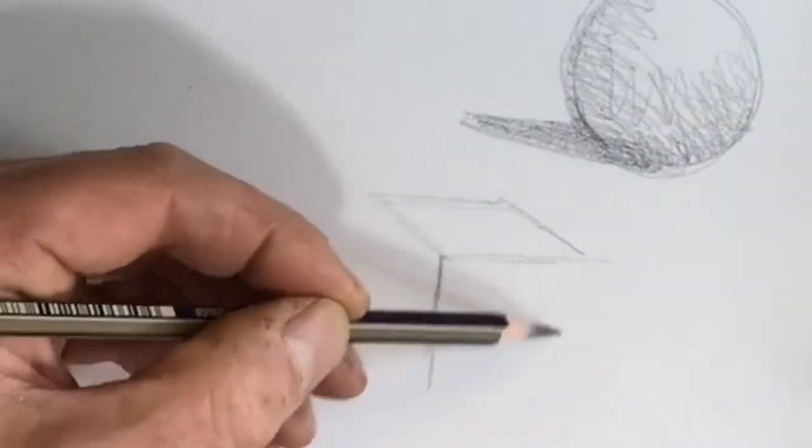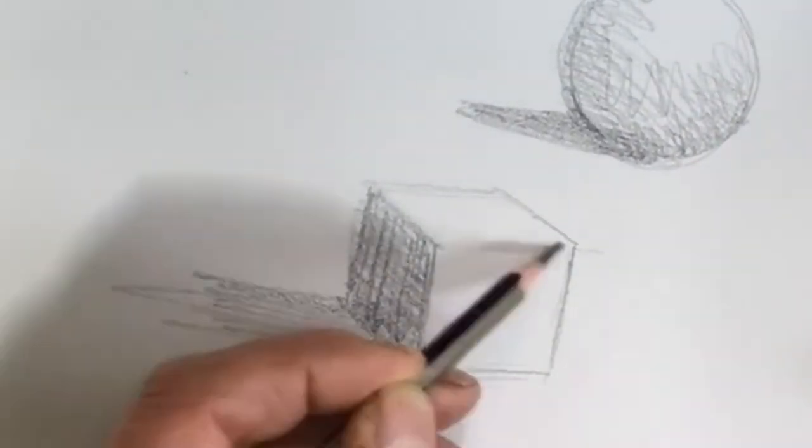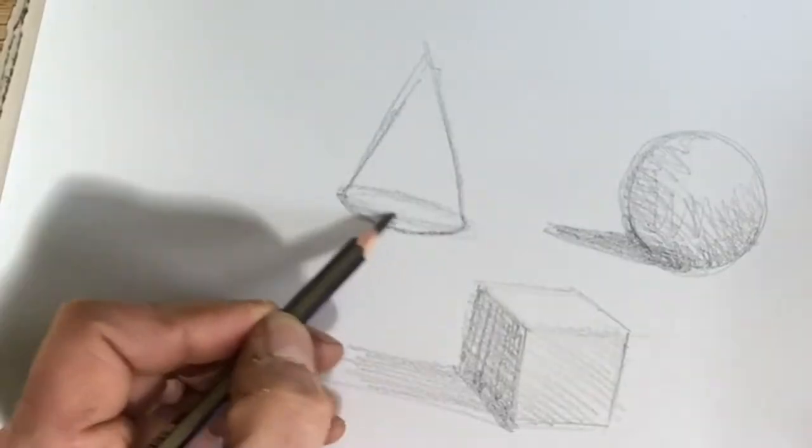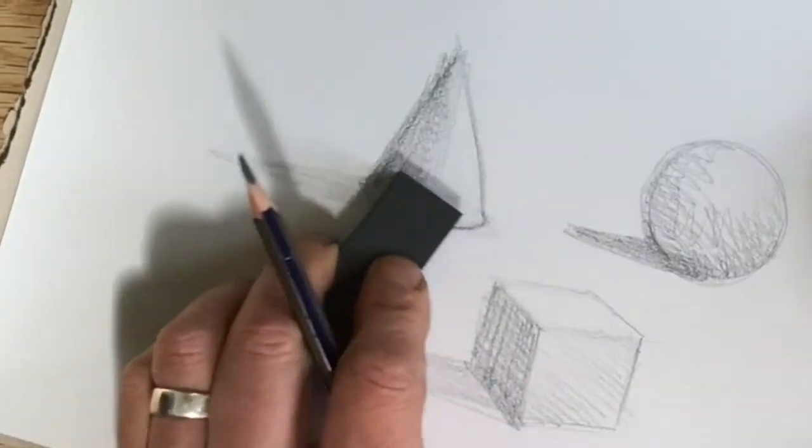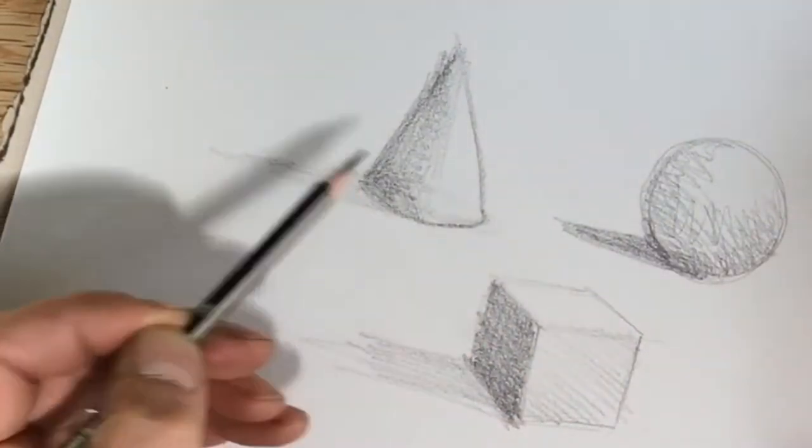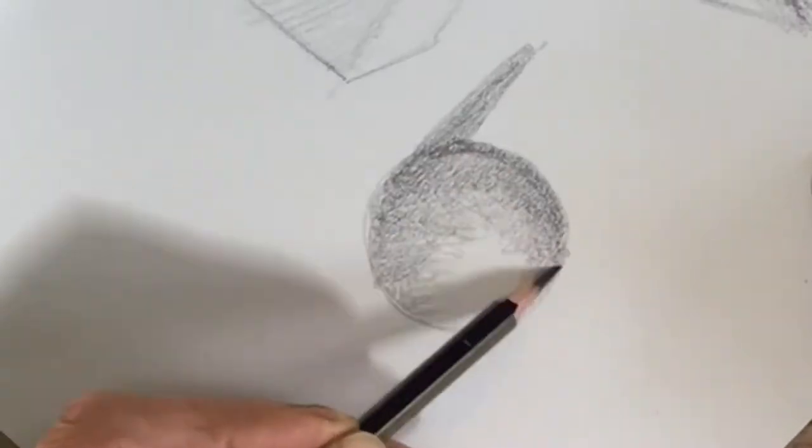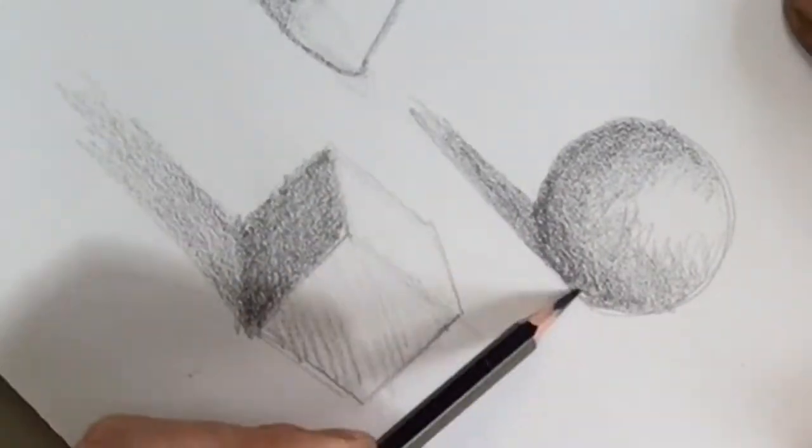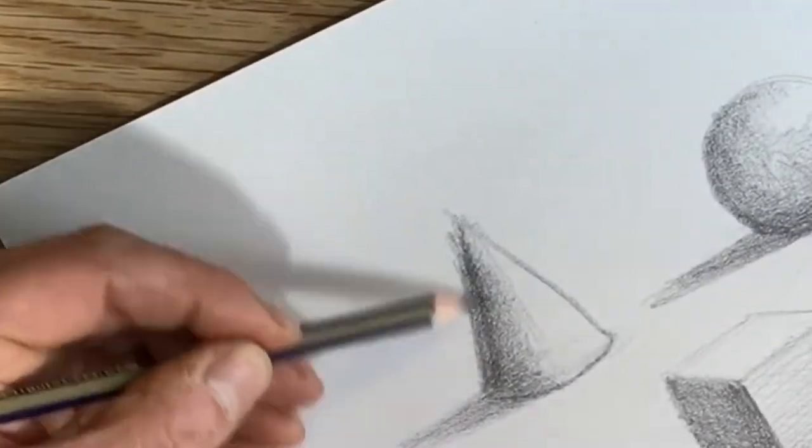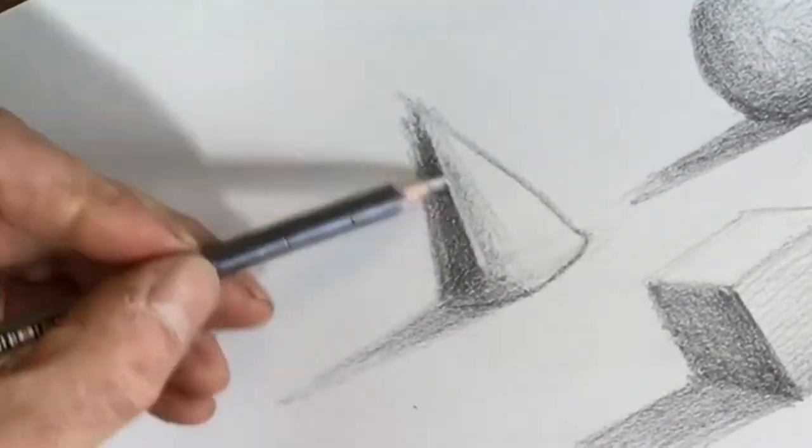If you've ever typed in beginner's drawing lesson, beginner's shading tips, I bet this is familiar. The advice is draw a circle, draw a cube, draw a cone, imagine the light, build up your tones in layers, use a nice soft pencil like a 4B or a 6B.